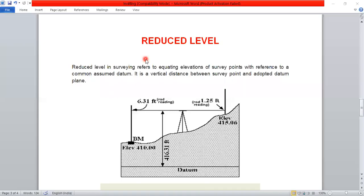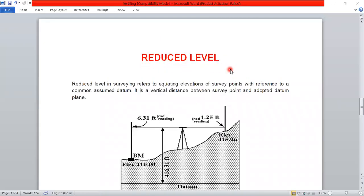Hi everyone. Reduced level in surveying refers to equating elevations of survey points with reference to a common assumed datum. It is a vertical distance between survey point and adopted datum plane.